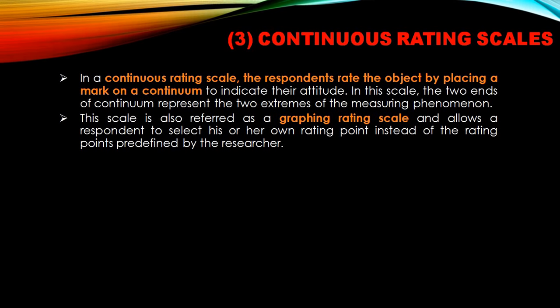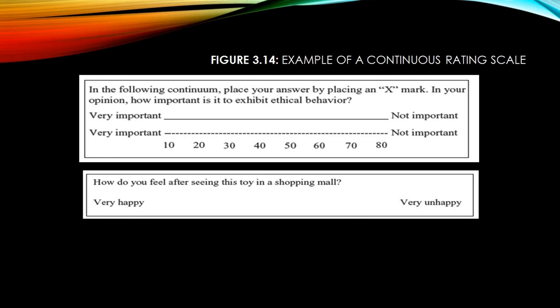In a continuous rating scale, the respondent is offered a continuum and can place their preference or choice anywhere on it without any rigid scaling. For example, between 'very happy' and 'very unhappy' — wherever the customer wants, they can put an X mark. It does not bind the customer to specific points; they are flexible to place their preference anywhere they wish.